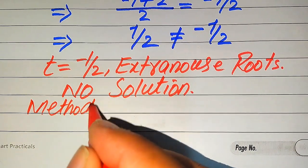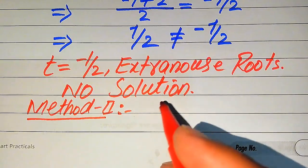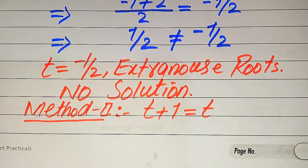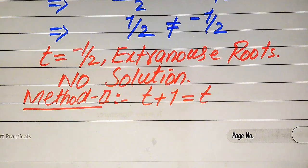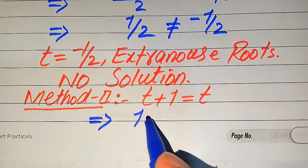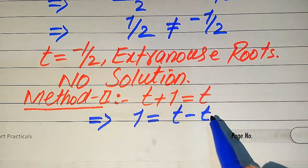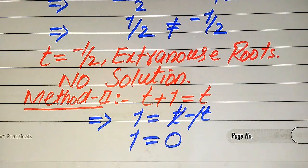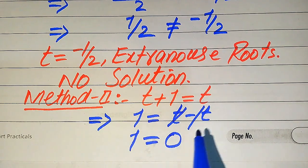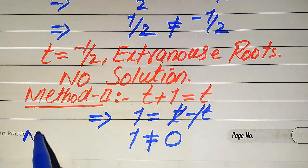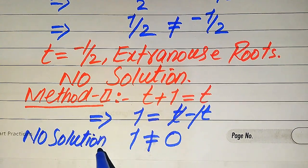Now we solve the problem using the second method. The given equation is √(t+1) = t. In this method we can directly conclude about the solution. When we move t to the right hand side it becomes 1 = t − t. The positive and negative t cancel each other, giving 1 = 0. Since 1 is never equal to 0, this is not possible, meaning we cannot get any value of t. Therefore this question has no solution.